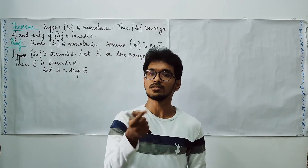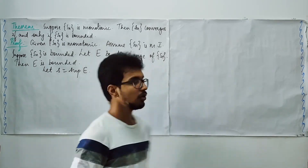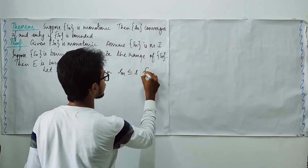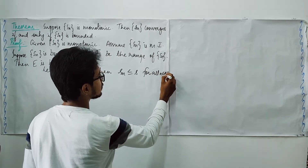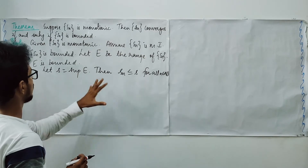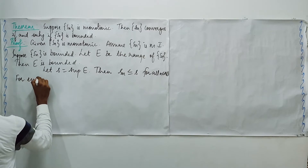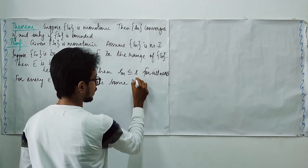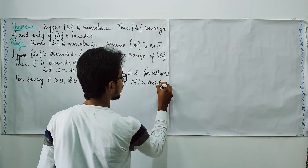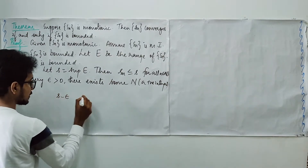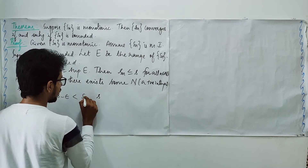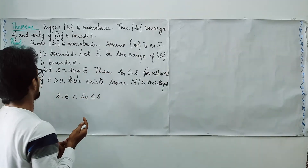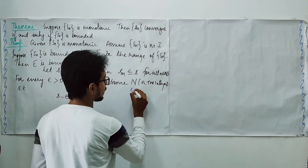For n greater than or equal to N, by monotonic increasing we have S_N less than or equal to S_n. Combining these, S minus epsilon is less than S_N, which is less than or equal to S_n, which is less than or equal to S. From this, S minus S_n is less than epsilon, and taking absolute values we get the absolute value of S_n minus S is less than epsilon for all n greater than or equal to N. Since monotonic sequences are defined on the real numbers with the standard Euclidean metric, this proves that S_n converges to S.